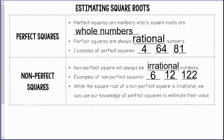A little bit of review of perfect squares. Perfect squares are numbers whose square roots are whole numbers. Perfect squares are always rational numbers. A rational number is any number that can be written as a fraction — also decimals that end or repeat.